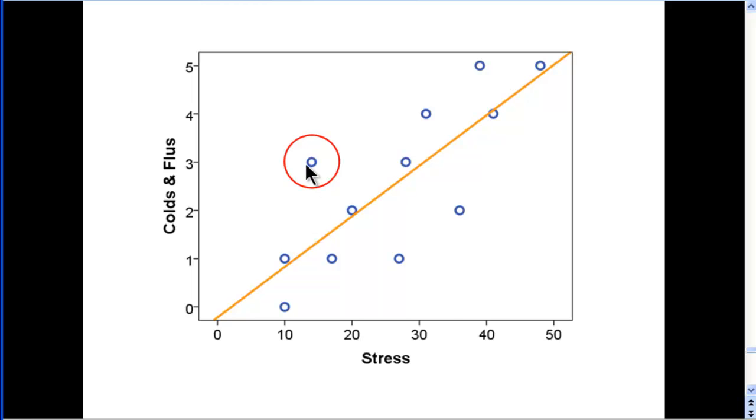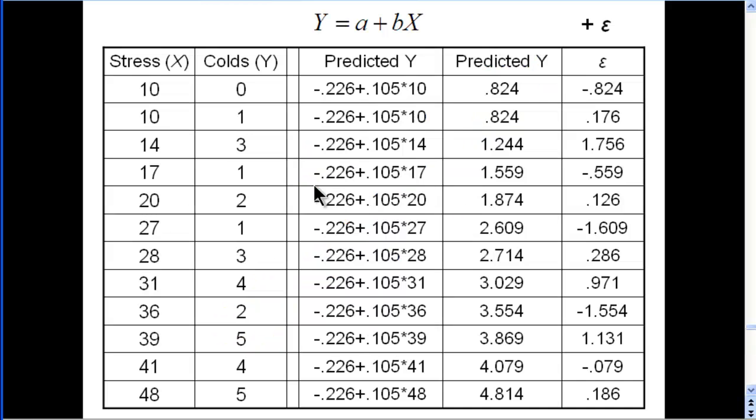And it also corresponds to the biggest residual term over here. This person had a stress score of 14 and actual colds of three, but predicted colds of 1.2, which gave a residual of 1.76.